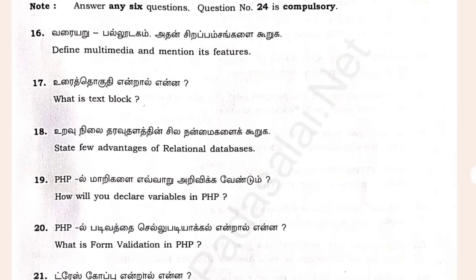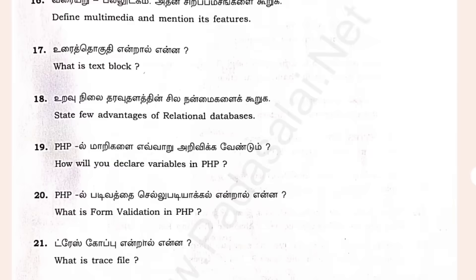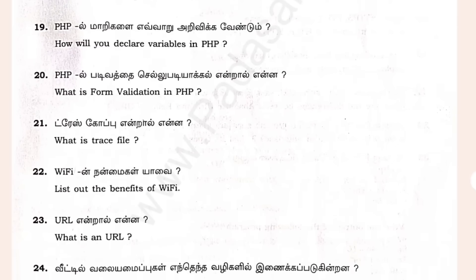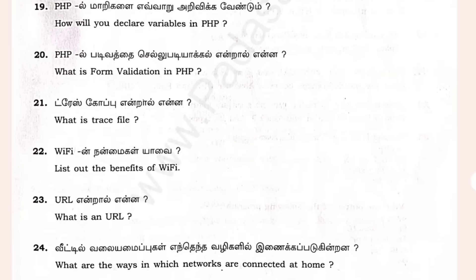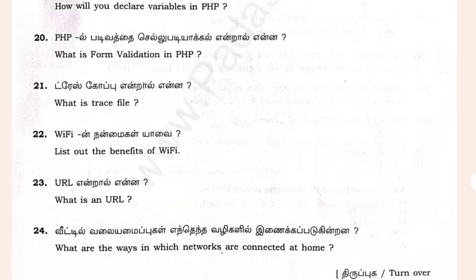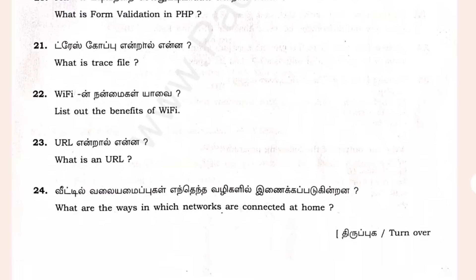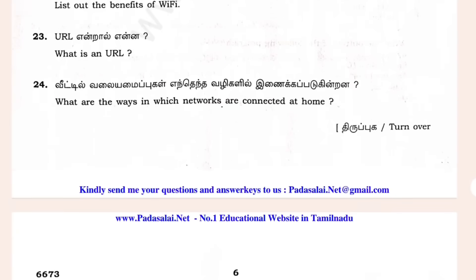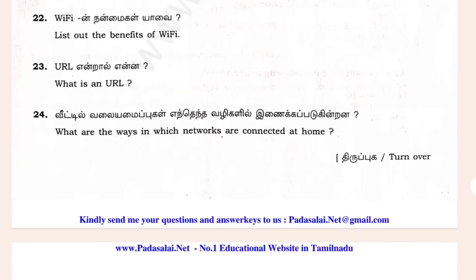The 1st one is easy, 2nd one is easy. Questions 22, 23, and 24 are easy — and 24 is compulsory. What are the ways in which networks are connected at home?